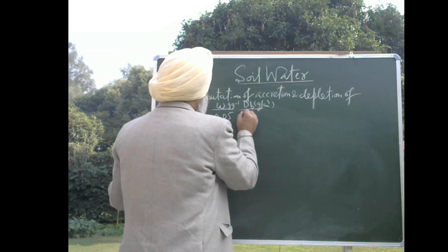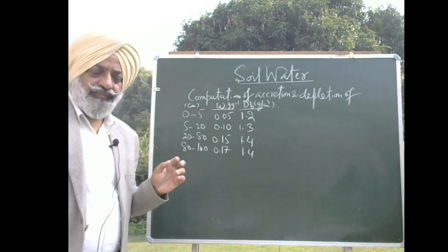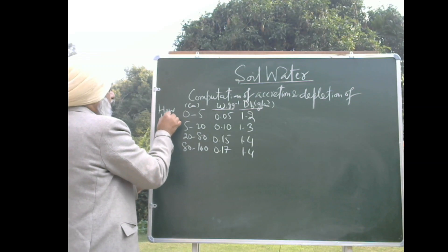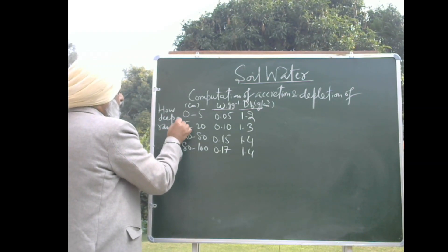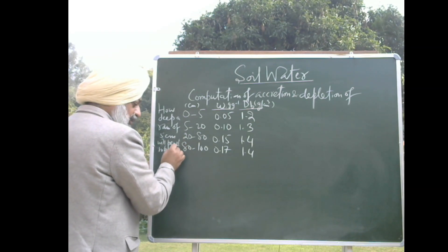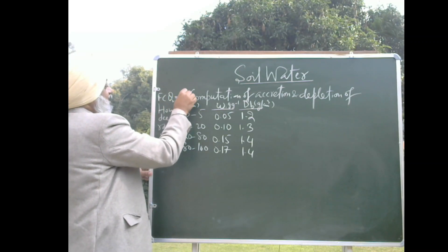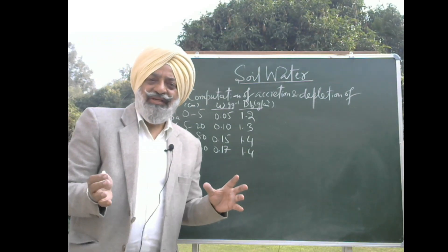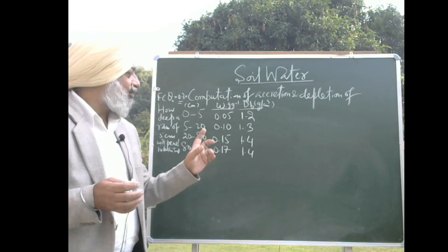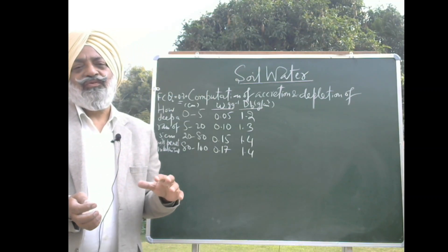The bulk density values in grams per cubic centimeter are 1.2, 1.3, 1.4, and 1.4 for the respective layers. You are asked how deep a rain of 5 centimeters will penetrate into the soil, given that field capacity moisture content is 0.30. You are given moisture content and bulk density for each layer, field capacity is 30 percent for the whole profile, and you need to find how deep the 5 centimeters of rainwater will penetrate.